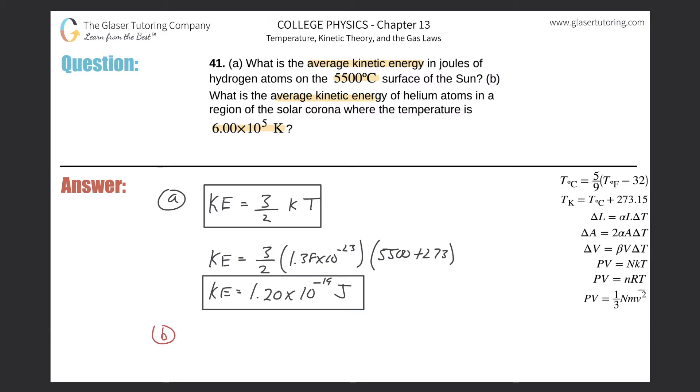So guess what? It's just the same thing. Kinetic energy, same formula. It's the three halves multiplied by the Boltzmann constant of 1.38 times 10 to the minus 23 multiplied by the temperature in Kelvin, but they gave it to us already. So it's just 6 times 10 to the fifth.